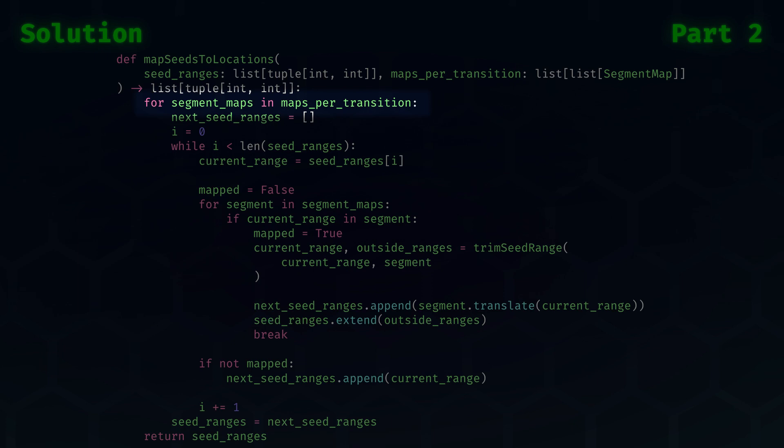We achieve this by treating SeedRanges as a queue. So we prepare a list for the updated ranges called NextSeedRanges, and we start iterating over the seed ranges. The first element in the queue is at i equals 0, and we set that as the current range, which we will evaluate. Then it might be that our range will find a mapping in our current transition, or it does not. So let's assume we will not find a mapping.